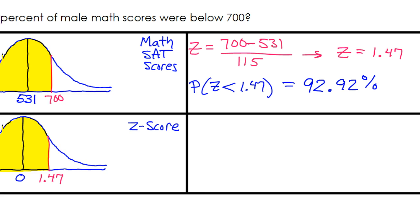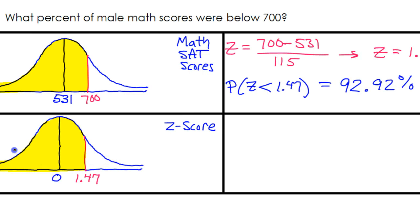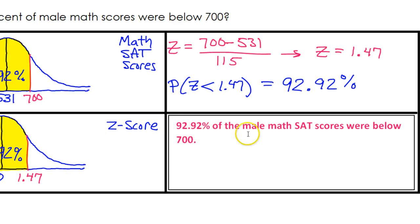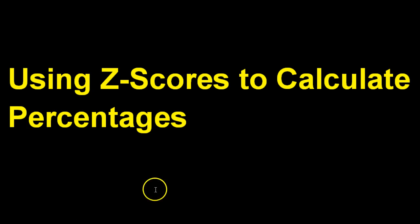Let's go ahead and record that in the picture. So this shaded area over here is 92.92% of the SAT math scores. And let's record our final answer in words. 92.92% of the male math SAT scores were below 700. And that is how you use z-scores to calculate percentages.